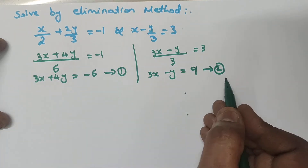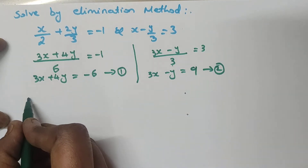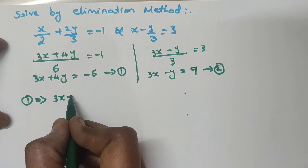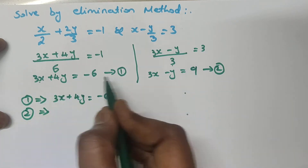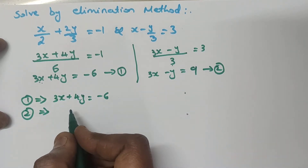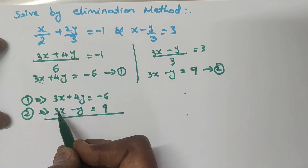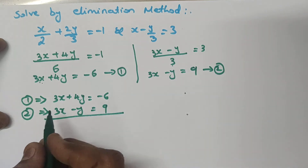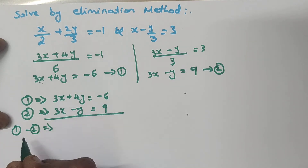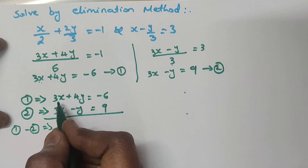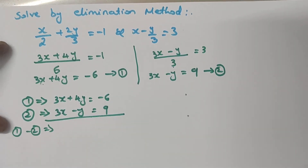Looking at the first and second equations, both have 3x — so the 3x terms can be cancelled. Since both 3x terms are positive (same sign), we subtract the equations. If both terms have the same sign, we subtract; if they have different signs, we add. So let me change the sign of the second equation.